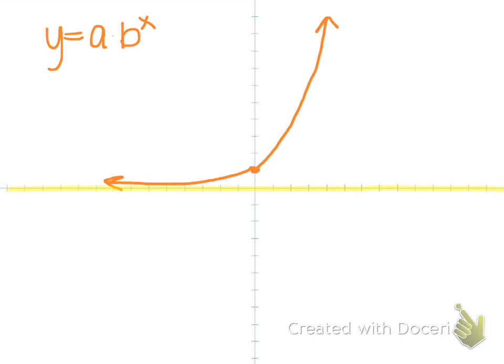Say you were given the function y equals 2 to the x plus 1. This plus 1 is what we call a vertical shift.